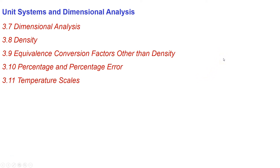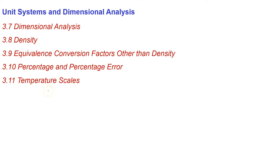In the second video dealing with chapter 3, we're going to look at some more complex problems in unit conversions and dimensional analysis. We're going to outline dimensional analysis, which is a method of using the unit to make certain that our calculations are on track. We'll also talk about how density can be used to convert between mass and volume, look at equivalency conversion factors, do a brief review of percentage and percentage error, and finally look at how we use formulas to convert between different temperature scales.